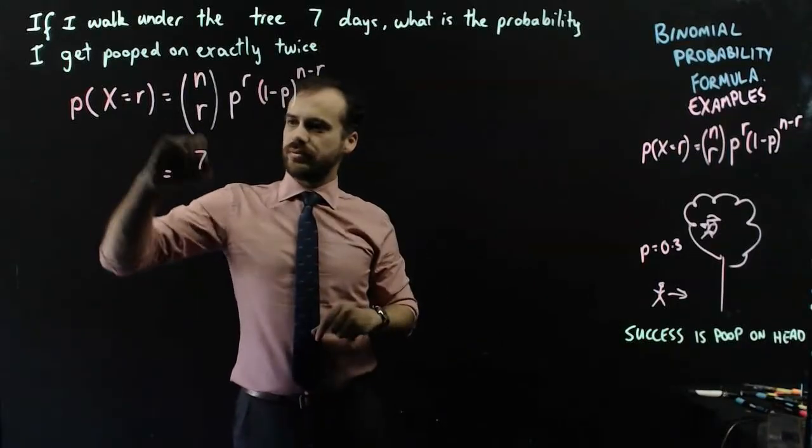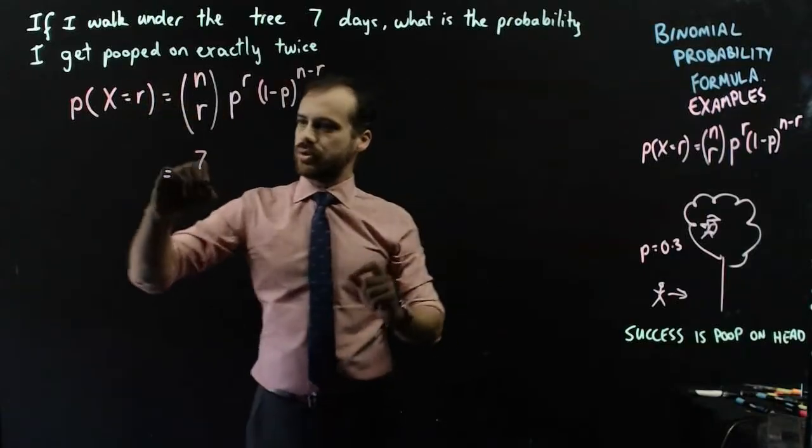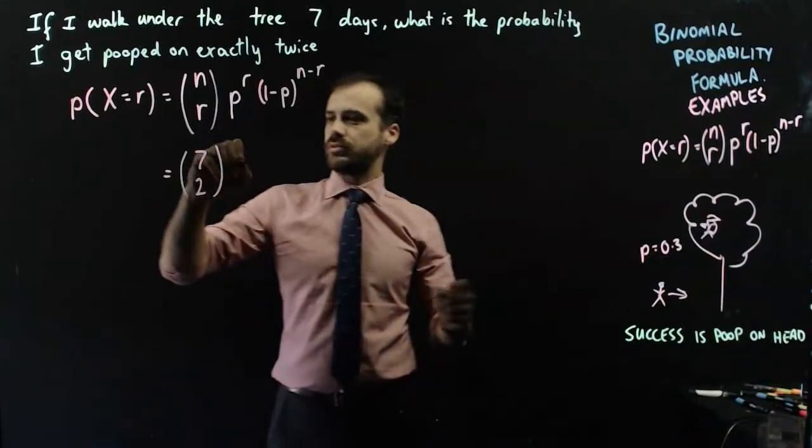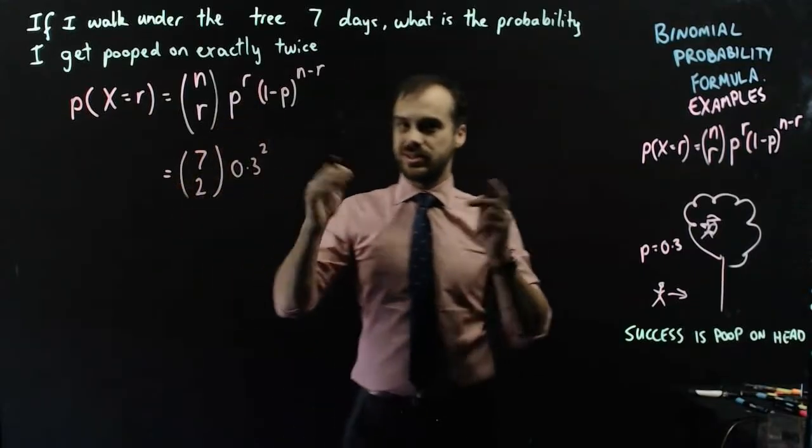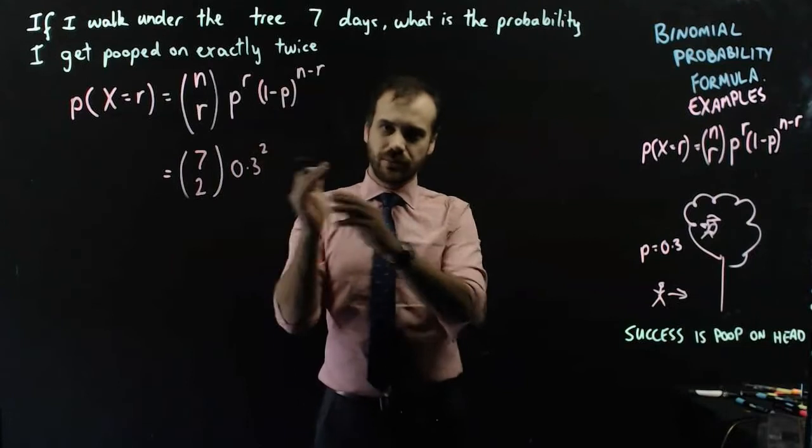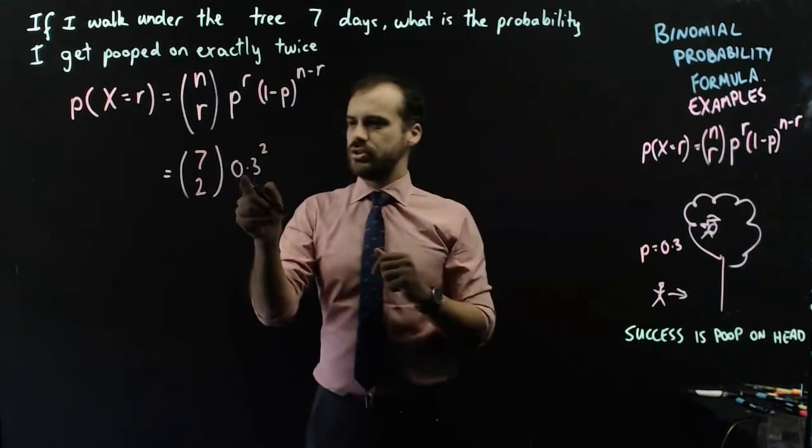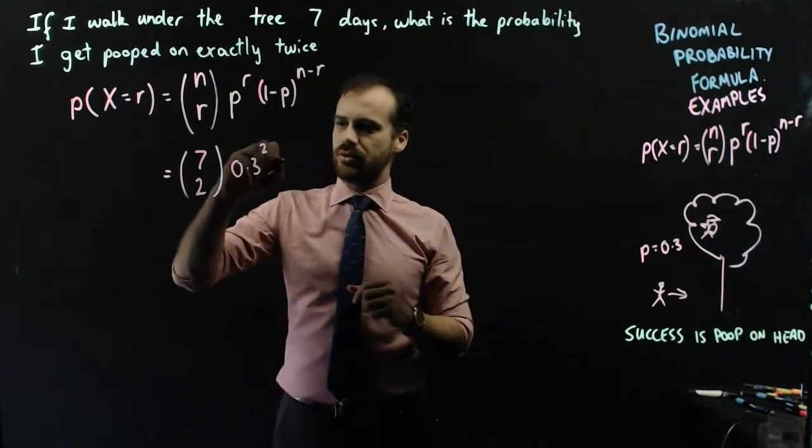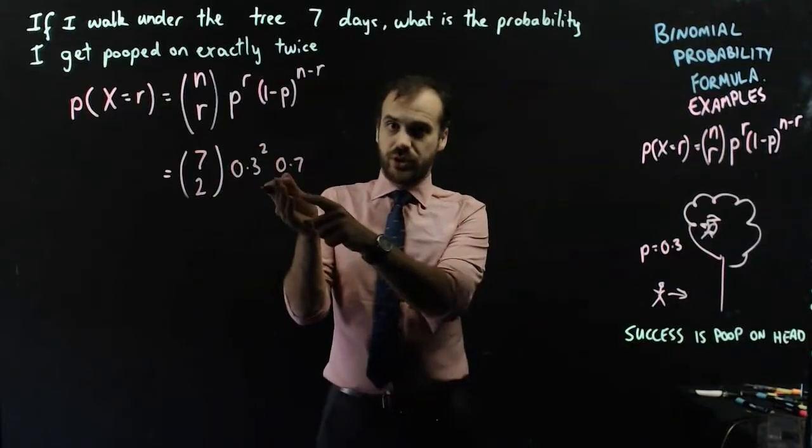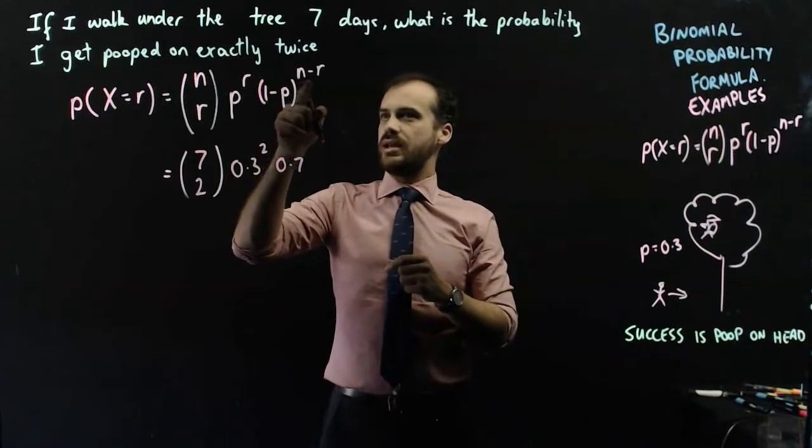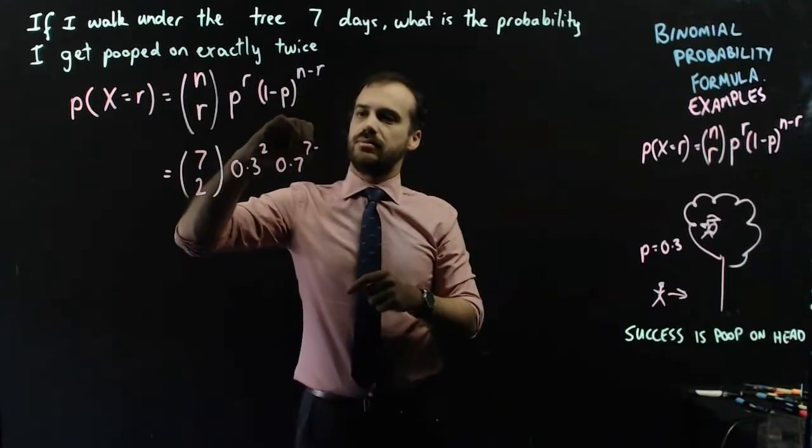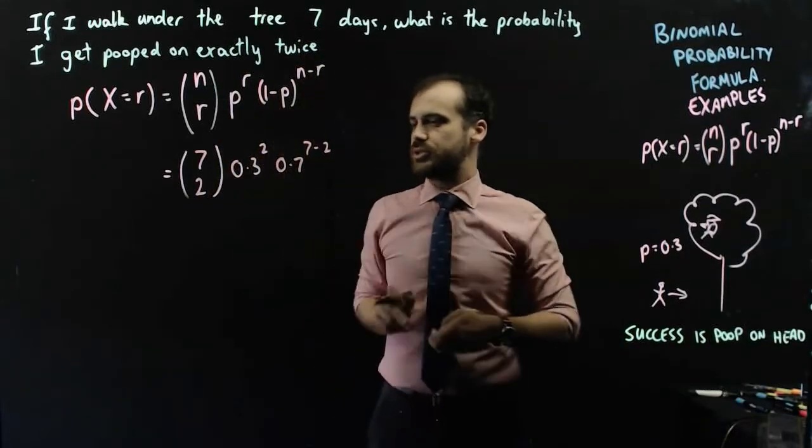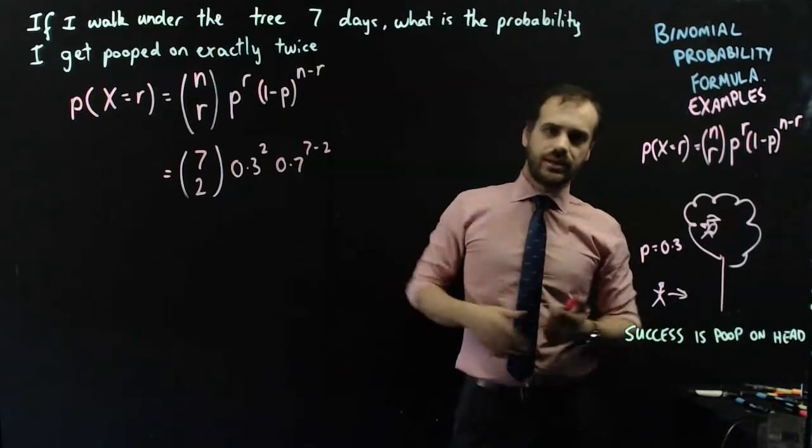There's seven trials. I get pooped on exactly twice. The probability of success getting pooped on is 0.3. There are two successes. One minus P - I'm not going to bother writing in one minus P, and you shouldn't either. You should just jump straight to, well, 0.3 is that, so one minus 0.3 is 0.7, which is the Q value, the probability of failure. And then n minus r, well, I've got 7 minus 2, which is 5.